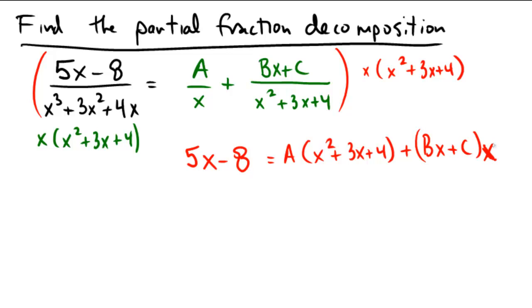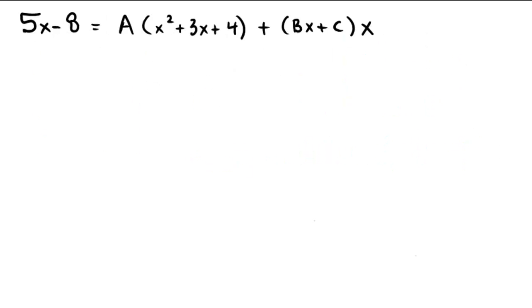Now we're going to use this, but I'm going to need some space for the algebra, so I'm going to move on to the next page so we can see this more easily. I just rewrote what I had before: 5x minus 8 equals A times x squared plus 3x plus 4 plus Bx plus C times x.